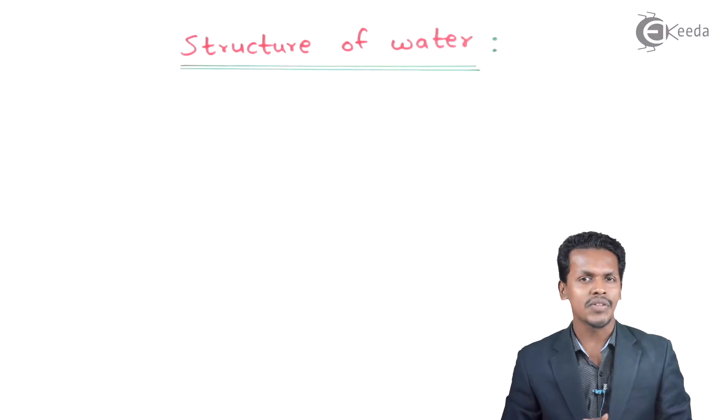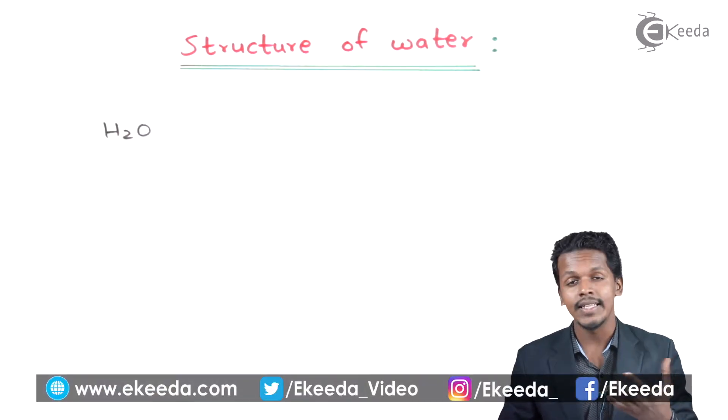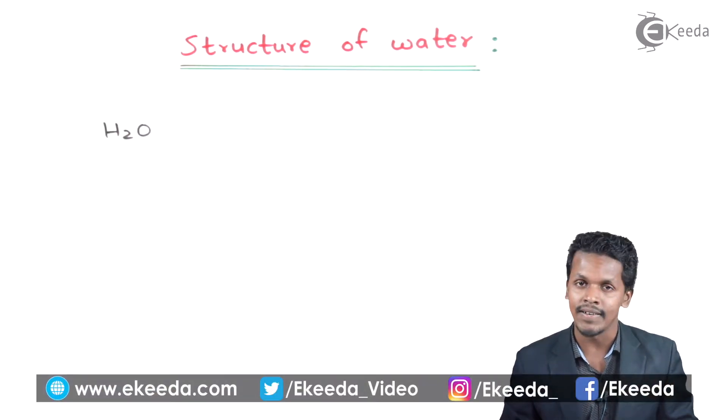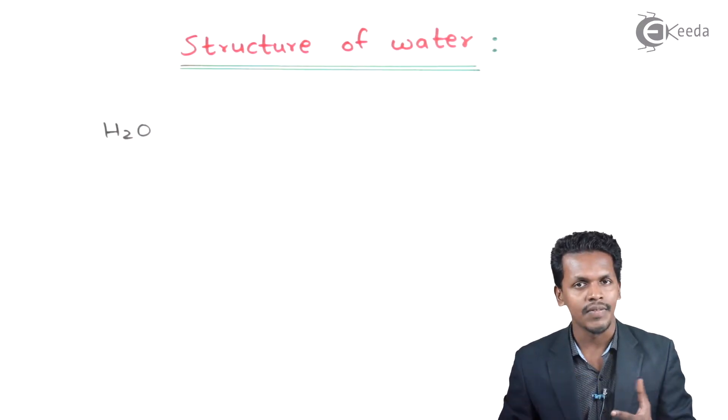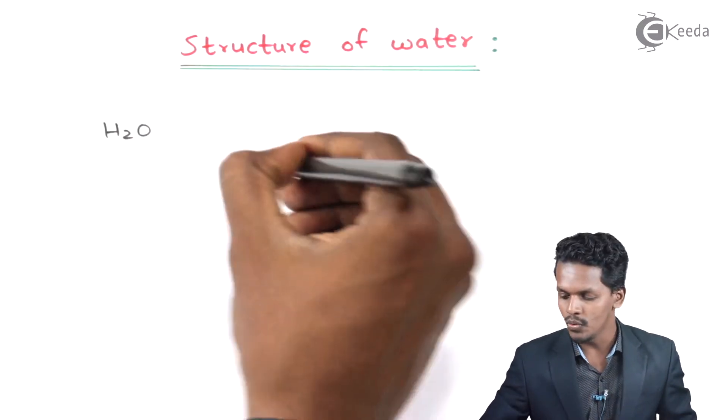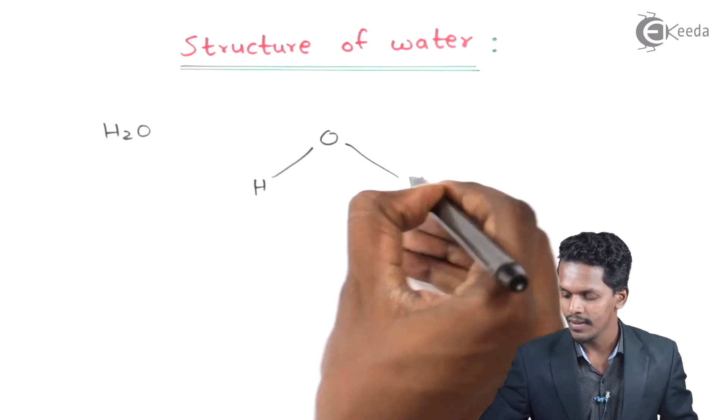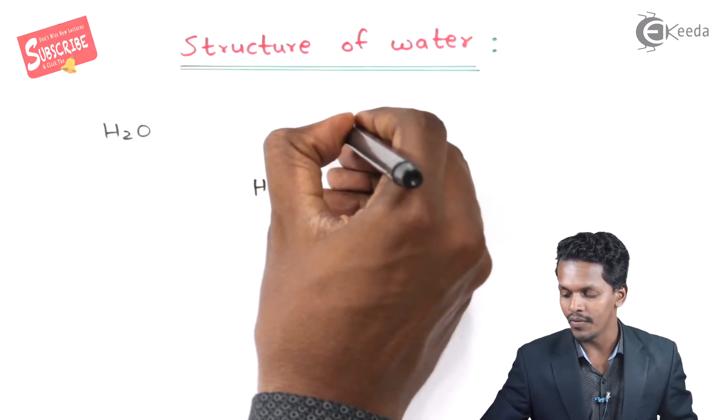Talking about the structure of water, H2O is basically known as water. In this case, oxygen is the central atom, and the oxygen which is bonded with two hydrogens consists of two lone pairs of electrons.